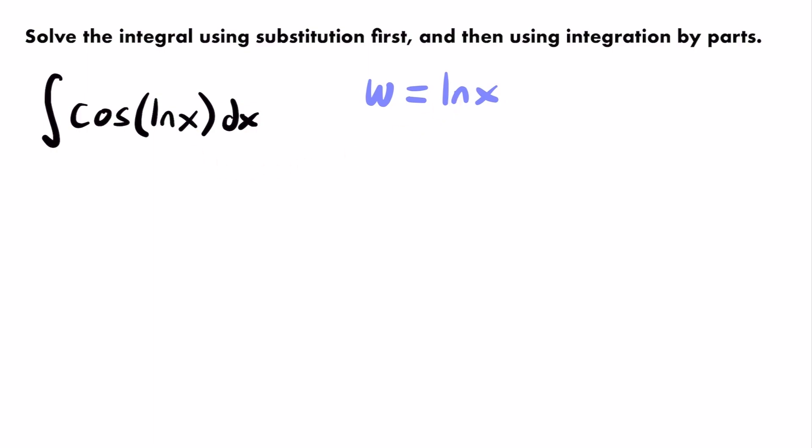Following the substitution process, we take the derivative of w with respect to x: dw/dx equals the derivative of the natural log of x, which is 1 divided by x. Now it might seem like u-substitution isn't a good idea here, because typically the derivative of whatever we set equal to u should appear somewhere else in the integral — and 1/x is nowhere to be seen.